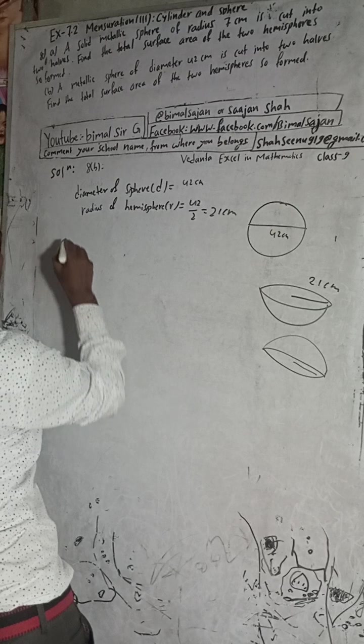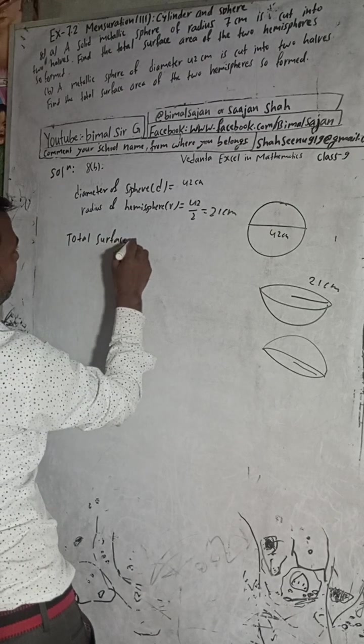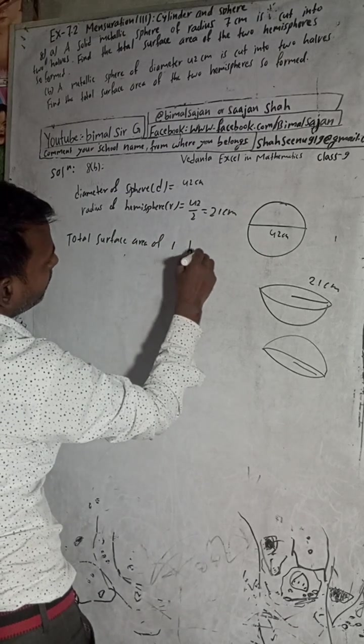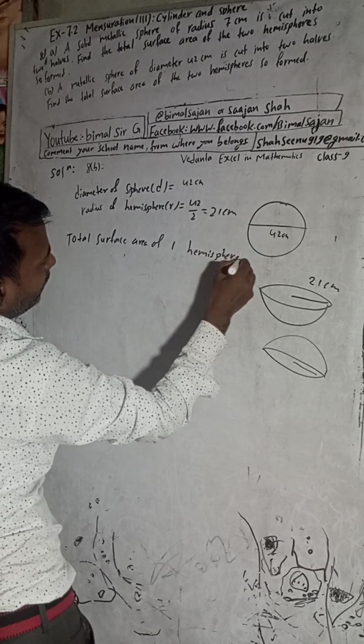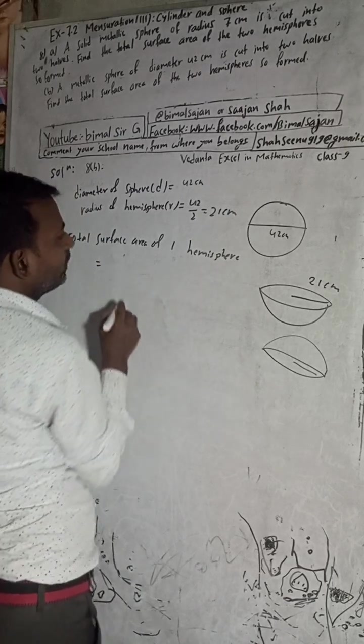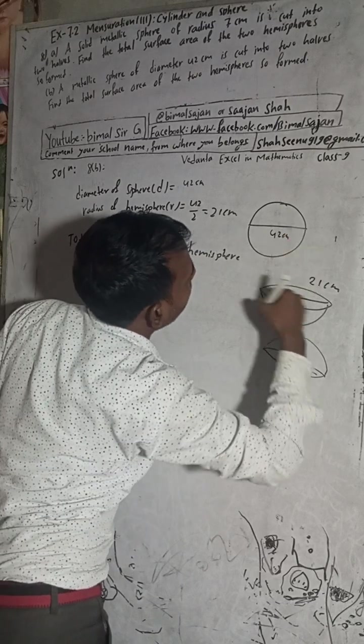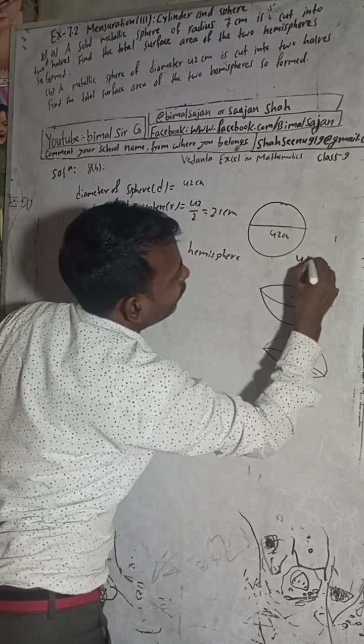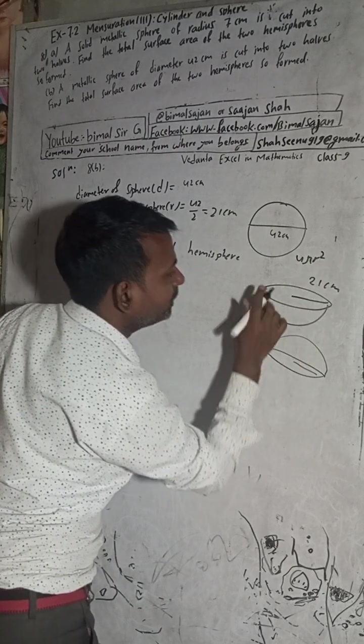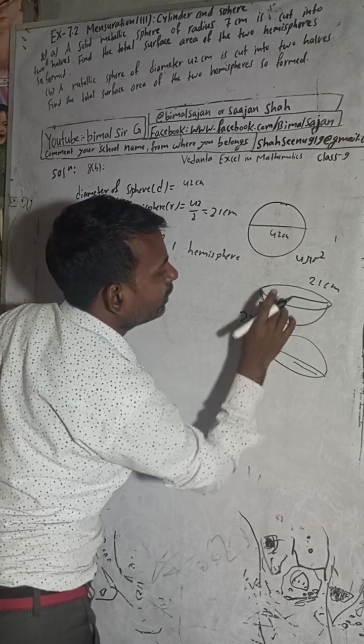Now, total surface area of one hemisphere will be: the surface area of a sphere is 4πr², and half of this will be 2πr². But this is only the curved surface area. We have to add the base, which is πr². So 2πr² plus πr² will be 3πr².